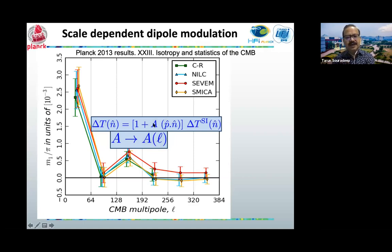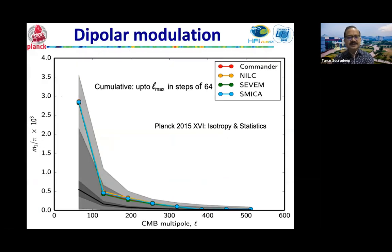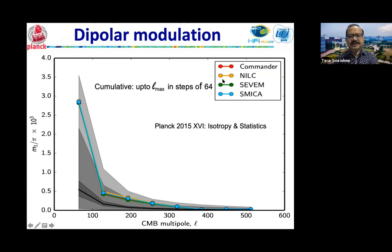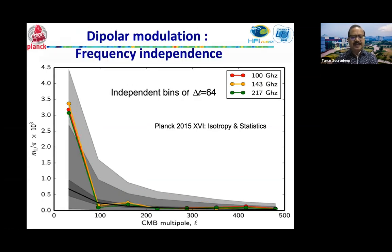If you allow A to be independent — which is what we did with Planck — we found it is scale dependent. The signal is only present in the lowest multipole bin up to 64; the rest of the bins are consistent with zero. This is the cumulative signal up to different L-maxes, and you see it sinks inside the cosmic variance band at higher multipoles but is close to three sigma at low multipoles. These are three different foreground removal methods, and all give identical signals — so it's unlikely to be a foreground removal effect. We also looked at three different frequencies and found the signal absolutely consistent across them, meaning it's achromatic.